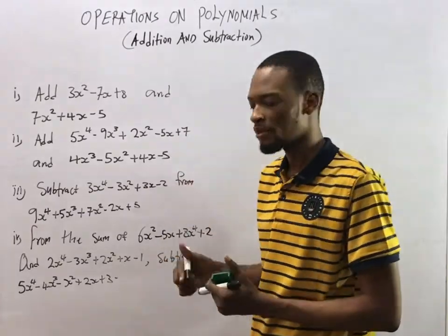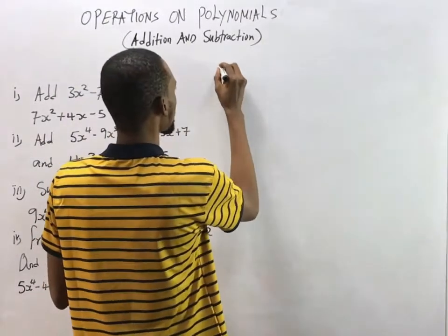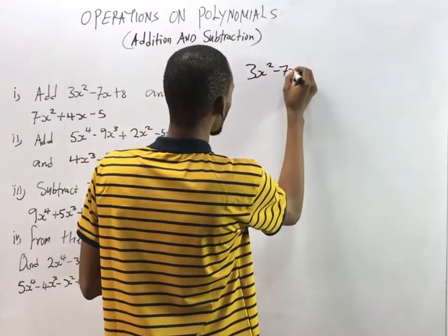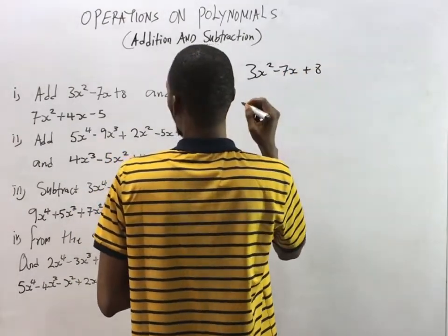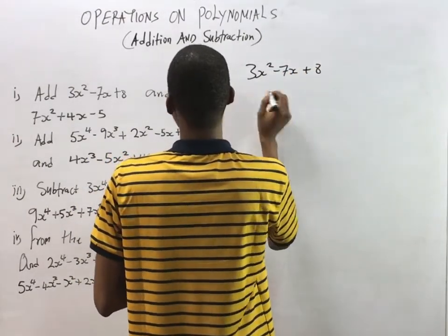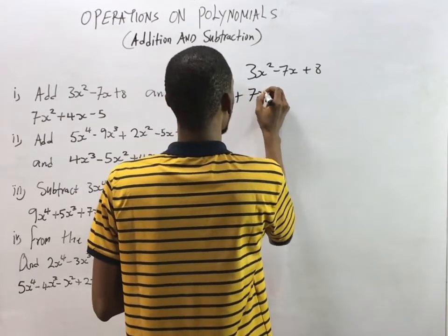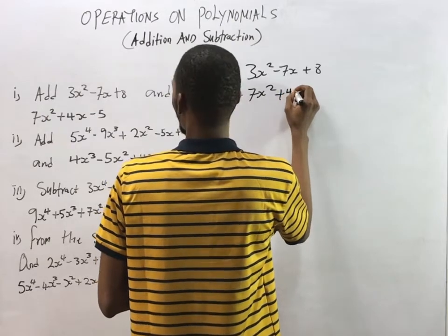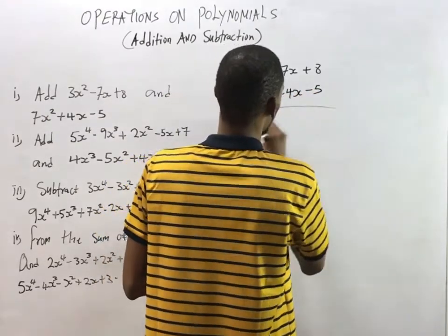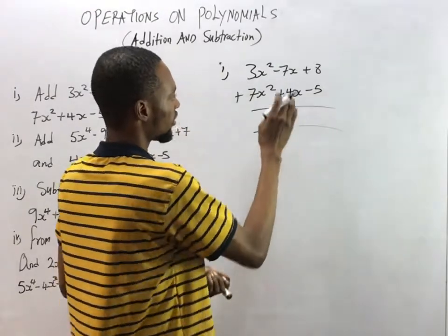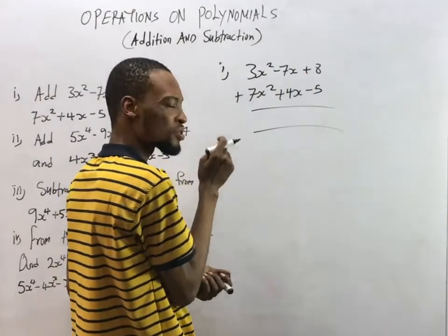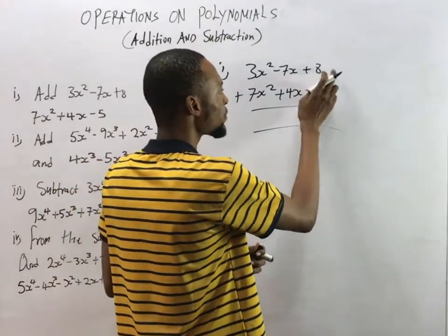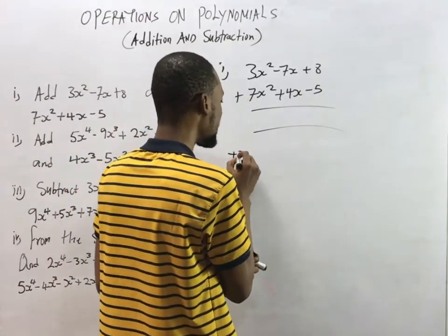Let's answer the first question. It says: (3s² - 7s + 8) plus (7s² + 4s - 5). We are doing addition, so the operation is plus. Take careful note of all the signs — be very conscious of them. Here we have +8 and over there we have -5.